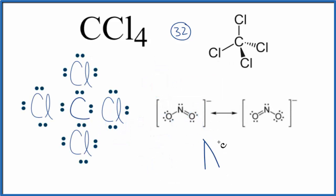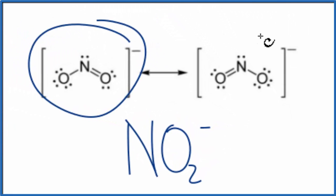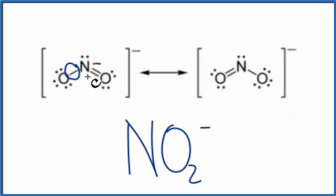This is the nitrite ion, NO2 minus. We can see there's two ways we could draw it. We could draw it this way or this way. The only difference is here we have a single bond and here we have a double.